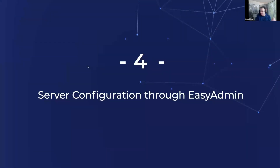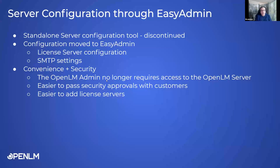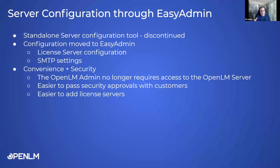Point four is something you will see right away. Previously, all OpenLM configuration basics were done on the backend through the OpenLM server application installed on the OpenLM server, where you could access all the different license managers you had set up. This is now gone. The server configuration is moved to EasyAdmin. You can do the license server configuration and SMTP settings configuration through EasyAdmin — and I will showcase how it looks after we successfully complete the installation today.